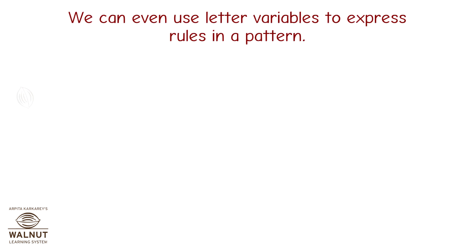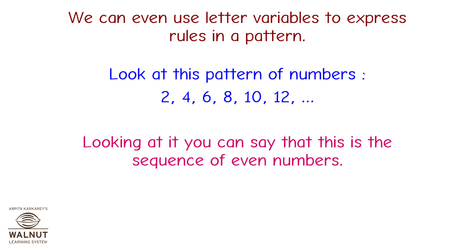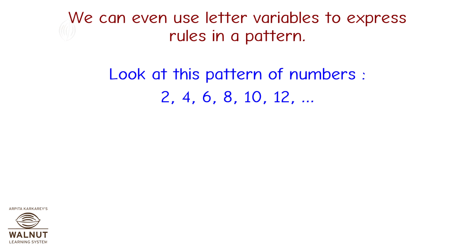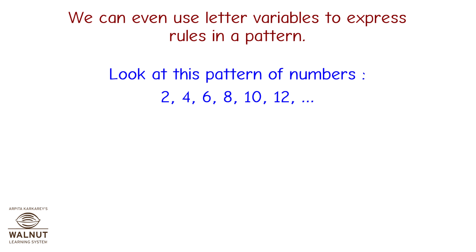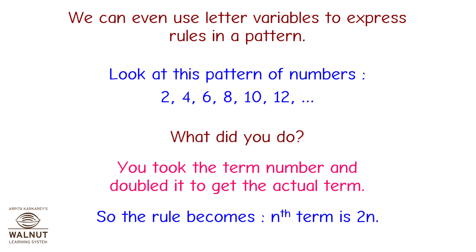We can even use letter variables to express rules in a pattern. Look at this pattern of numbers: 2, 4, 6, 8, 10, 12 and so on. You can say that this is the sequence of even numbers. The first term is 2, the second term is 4, the third term is 6, so the tenth term is 20. You took the term number and doubled it to get the actual term. So the rule becomes: nth term is 2n.